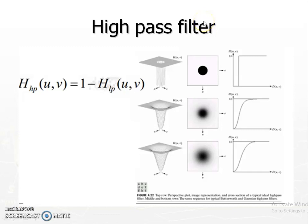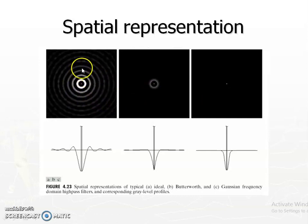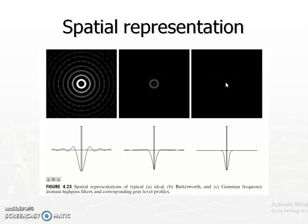The high-pass filter is simply one minus the frequency response of the low-pass filter — the inverted case. All three types are shown: the Gaussian case, the ideal filter case, and the Butterworth filter case. The corresponding spatial representations are also shown: the ideal filter, the Butterworth filter, and the Gaussian filter. The ringing effect will again appear in the ideal and Butterworth cases due to the sinc-like impulse response, but in the Gaussian case the Fourier transform of a Gaussian is a Gaussian, so there is no ringing.